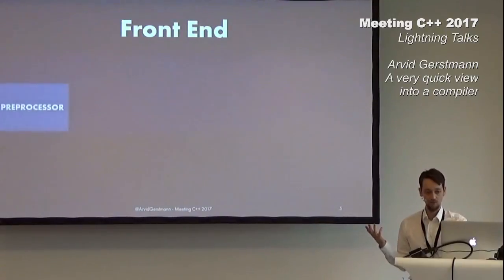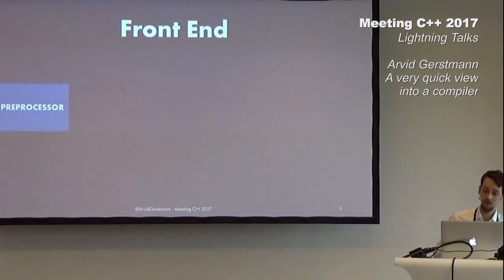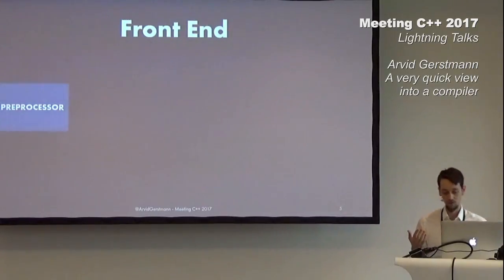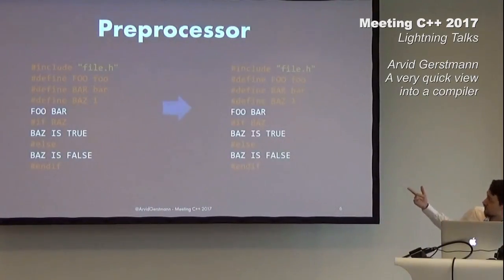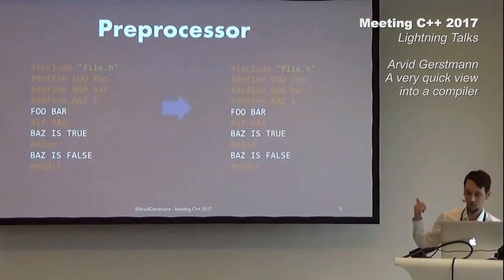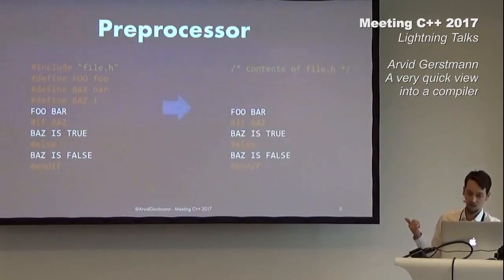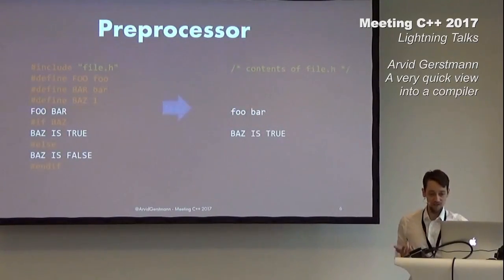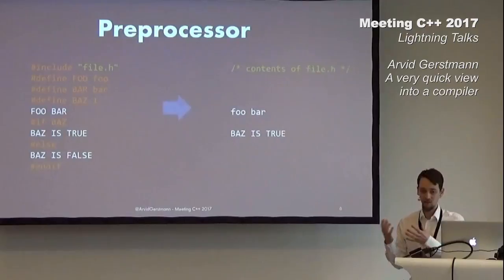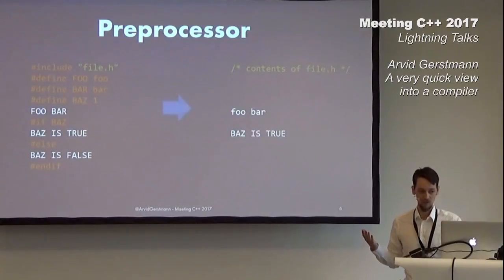Let's start with the preprocessor. The preprocessor's job is to handle source file inclusion, macro replacement, and conditional inclusion. It transforms our input source code into a fully preprocessed output by going through a few well-defined steps. The preprocessor is kind of a leftover from C and is very C and C++ specific — you might not find it in different languages.